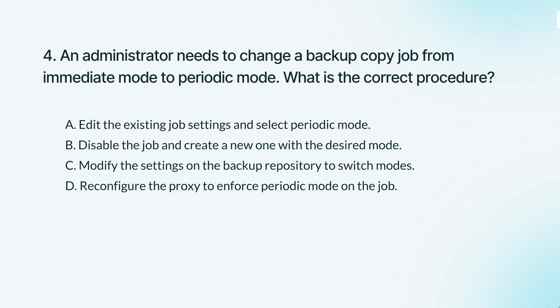The correct answer is: you can simply edit the existing backup copy job settings to switch from immediate mode to periodic mode without needing to create a new job.